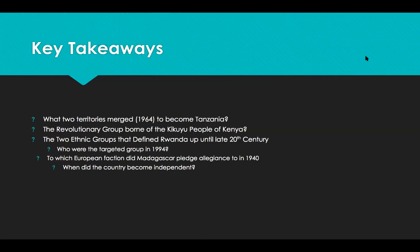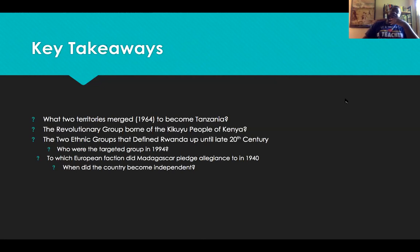So what are some of the key takeaways? What two territories merged in 1964 to become Tanzania, and who were they led by? What was the revolutionary group in Kenya born out of the Kikuyu people but also supported by the Embu and Meru people? Who are the two so-called ethnic groups that defined Rwanda up until the late 20th century? Which group was mostly targeted in the 1994 genocide? To which European faction did Madagascar pledge allegiance in 1940, and when did the country become independent? These are some key takeaways I want you to consider as we continue with our series.